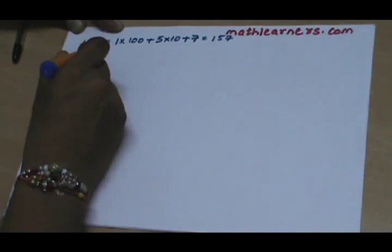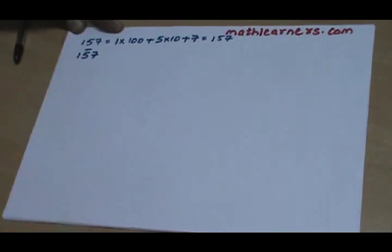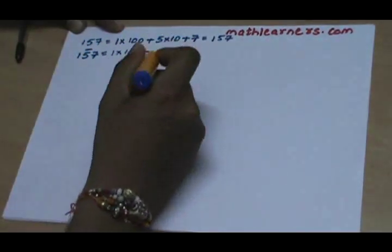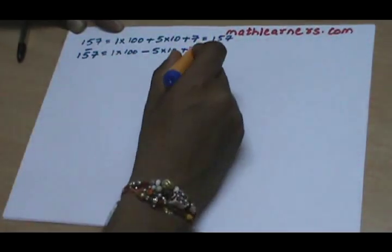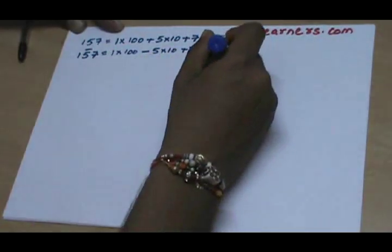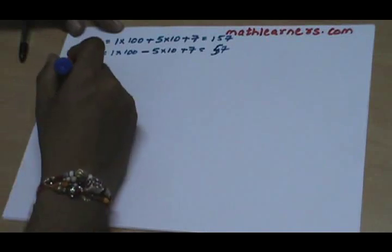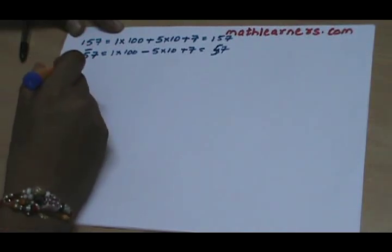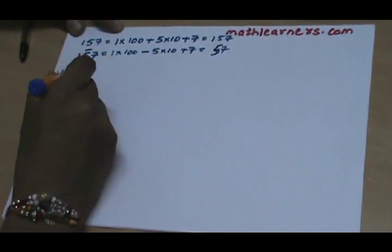Now suppose we have the number 157 with a bar present over 5. This indicates that 5 is a negative digit. In the place value system, this can be written as 1 multiplied by 100, minus 5 multiplied by 10, plus 7, which gives 57. Such numbers where at least one digit is negative are called Vinkalam numbers or bar numbers.